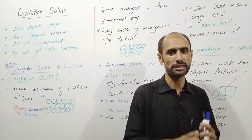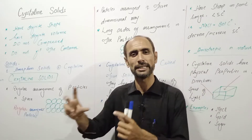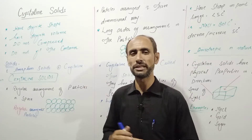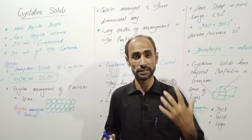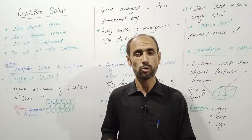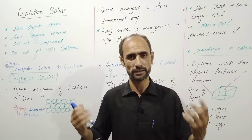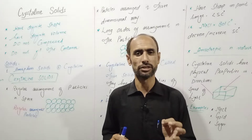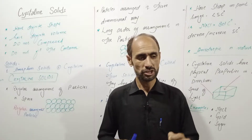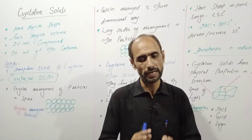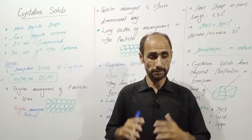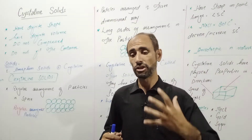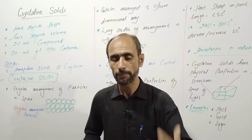Crystalline solid has a very specific arrangement of particles. It is a particular structure that can be three-dimensional in space. The particle has a particular structure so that the solid has a regular geometrical shape.